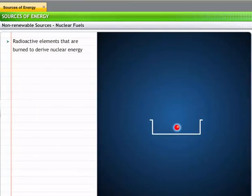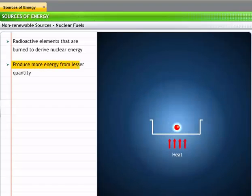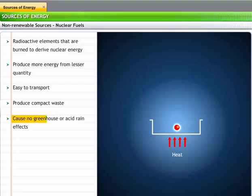Nuclear fuels are radioactive elements that are burned to derive nuclear energy. Compared to fossil fuels, nuclear fuels can generate a huge amount of energy from a small quantity, are easy to transport, produce compact waste and do not cause greenhouse or acid rain effects.